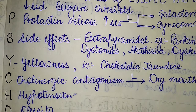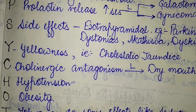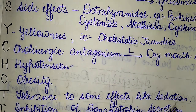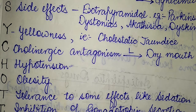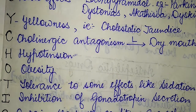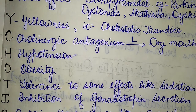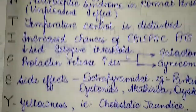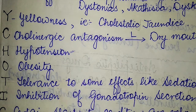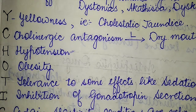The O corresponds to obesity. The T corresponds to tolerance to some effects like sedation — patients on anti-psychotic therapy can develop tolerance to effects such as sedation. The second I corresponds to inhibition of gonadotropin secretion, which is inhibited due to the use of anti-psychotic drugs.